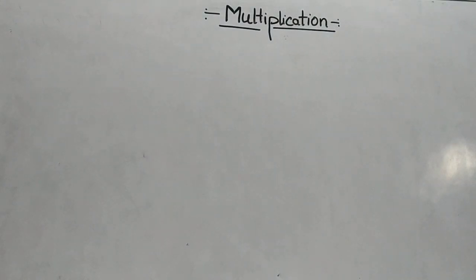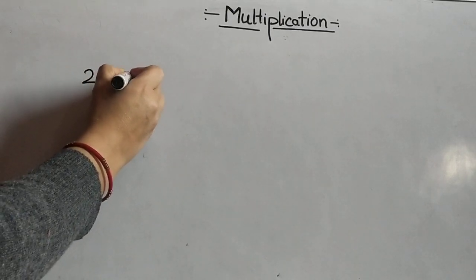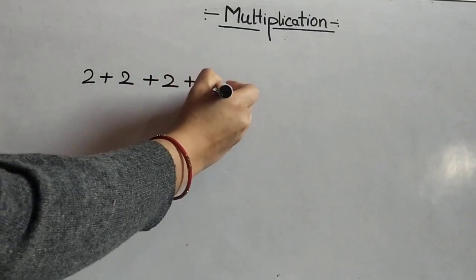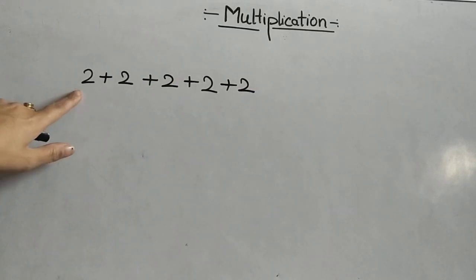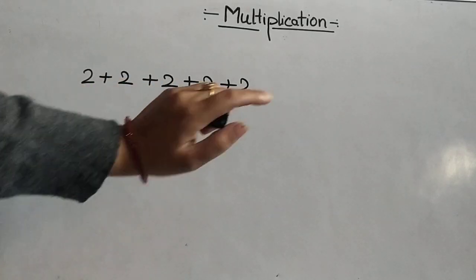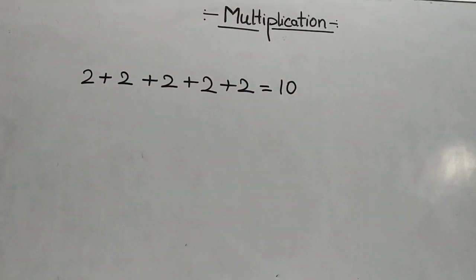In other words, the short way of finding the sum when all addends are same is called multiplication. For example, 2 plus 2 plus 2 plus 2 plus 2 — all addends are same, 2 appears 5 times. So this is 10. Here 2 has been added 5 times and we are getting 10 as a result.